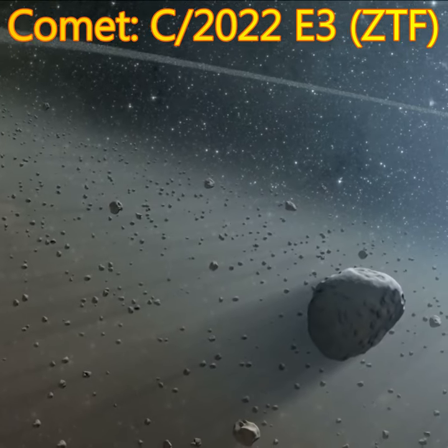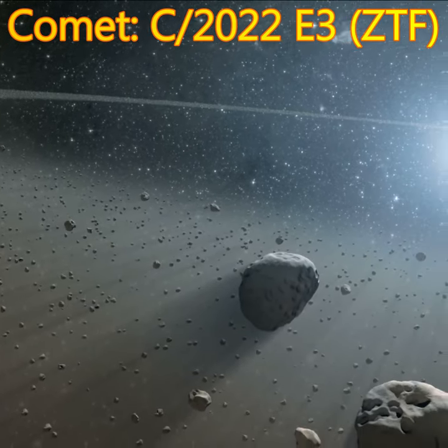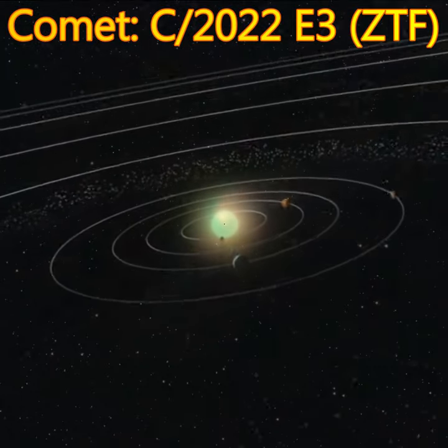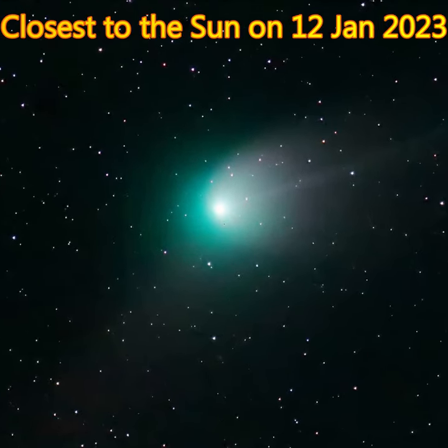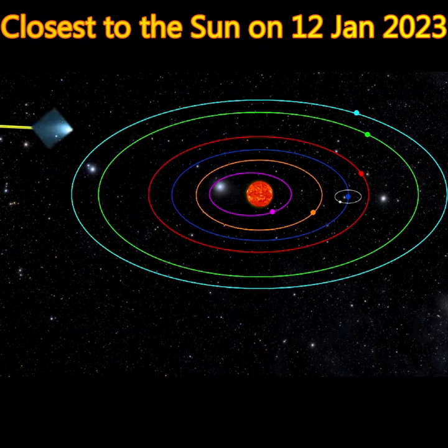After a journey of hundreds of billions of miles from the remote Oort cloud to the inner solar system, a bright green comet C2022E3 ZTF came closest to the Sun on January 12, 2023.